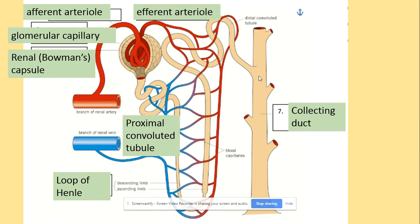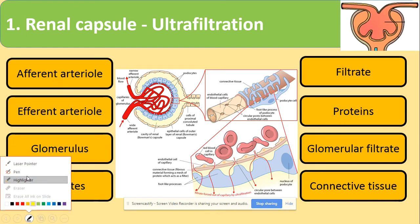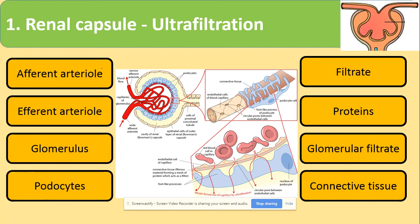Now let's look at the processes taking place in each part. First, in the renal capsule, ultrafiltration is taking place. We have the afferent arteriole coming in and efferent arteriole coming out, with the glomerulus — the capillaries inside the renal capsule. The really important cells are podocytes, which make up the basement membrane. Ultrafiltration is the production of the glomerular filtrate.